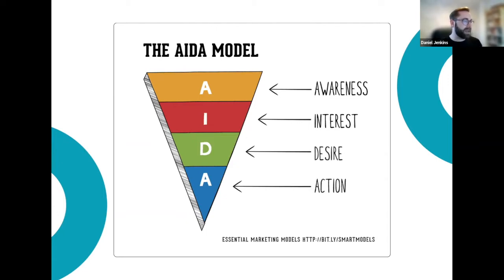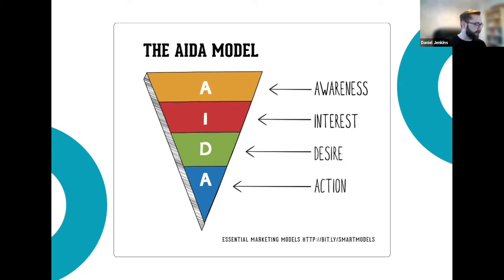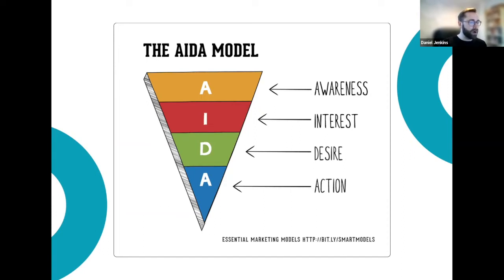The AIDA model applies to any customer purchase process, whether B2B or B2C — booking a holiday or buying stationery supplies for a corporate office of 200 people. You start with awareness: you're aware of a problem or need. Then you develop interest, exploring your options. If you're booking a holiday you're looking at what's available; if you need stationery, you're looking at the most cost-effective bulk options.